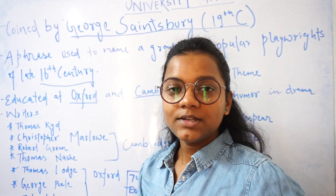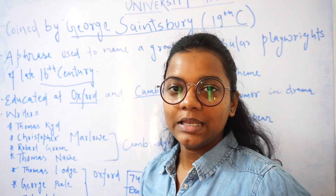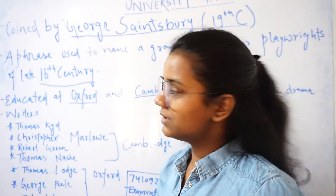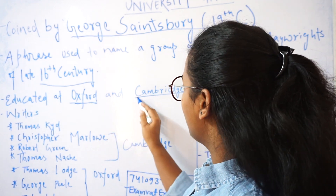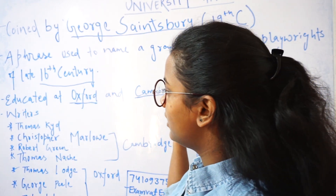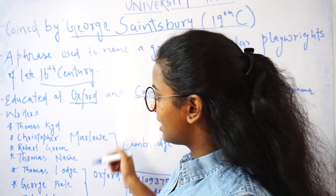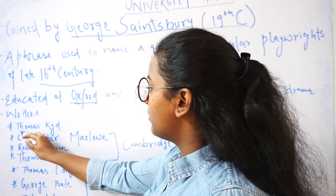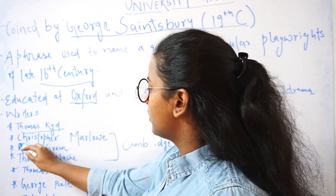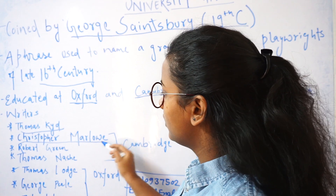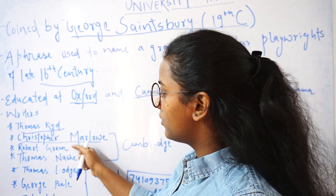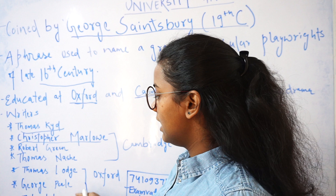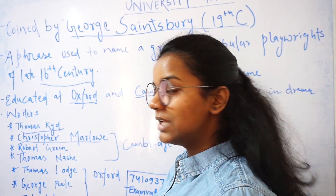These playwrights were basically educated at Oxford and Cambridge University. The seven writers we have in this group are Thomas Kidd, Christopher Marlowe, Robert Green, Thomas Nash, Thomas Lodge, George Peel, and George Lillian.